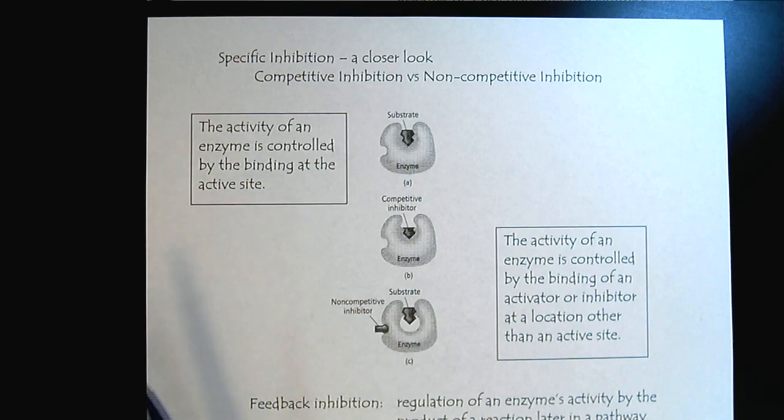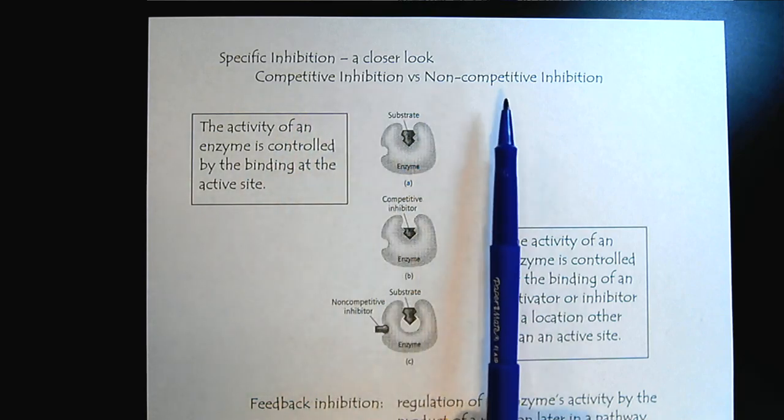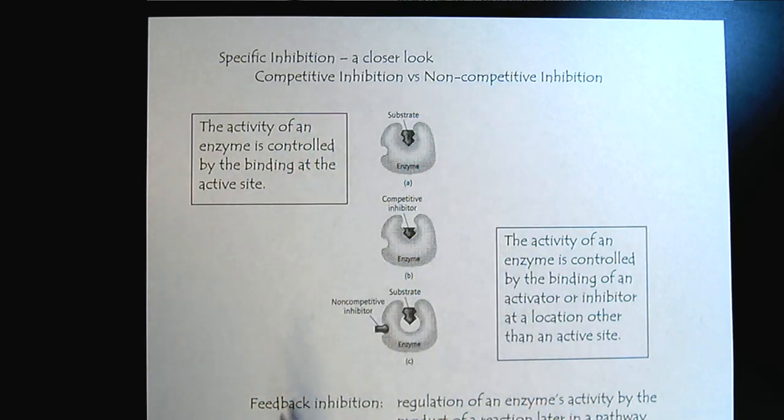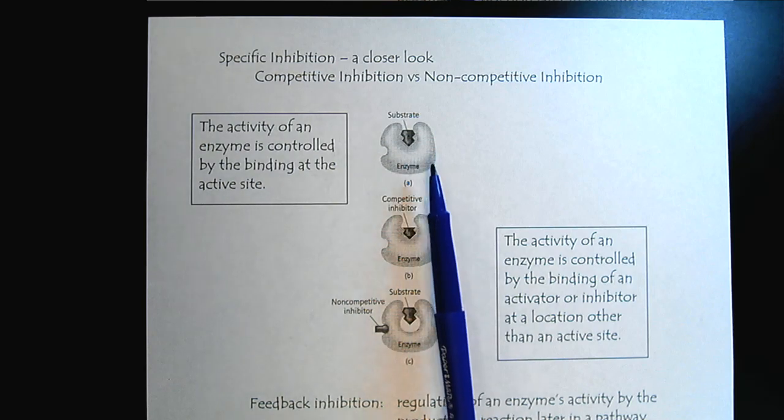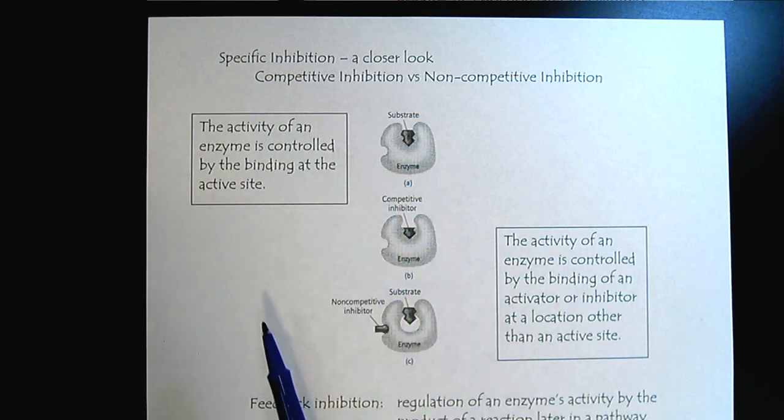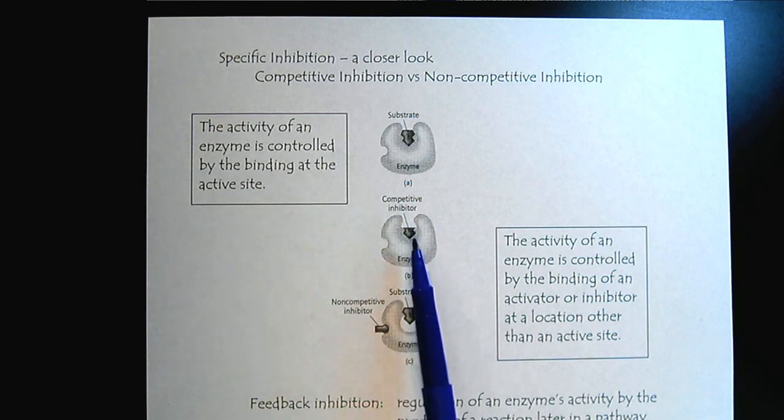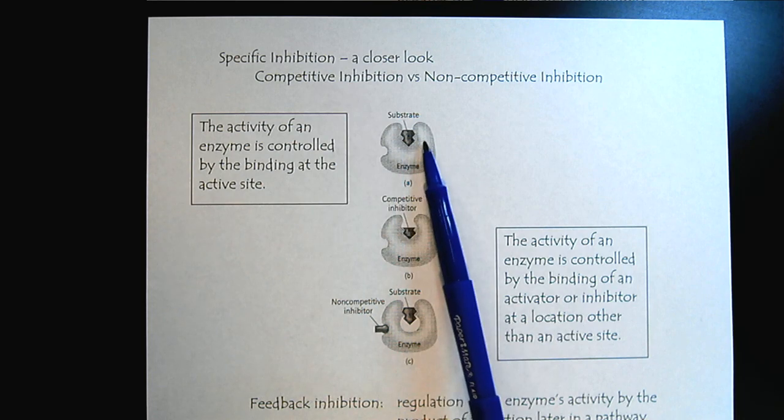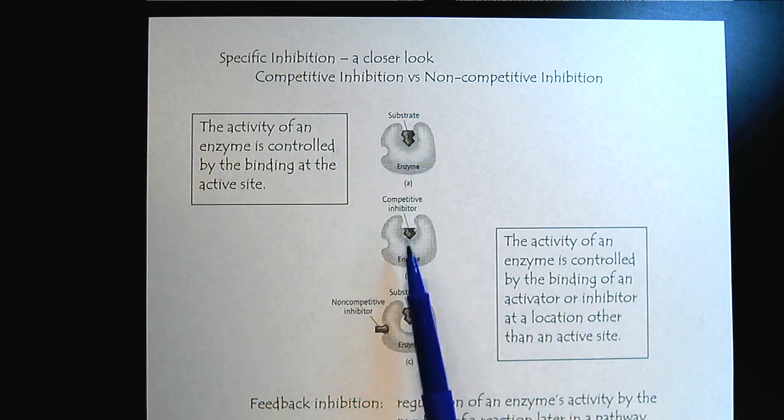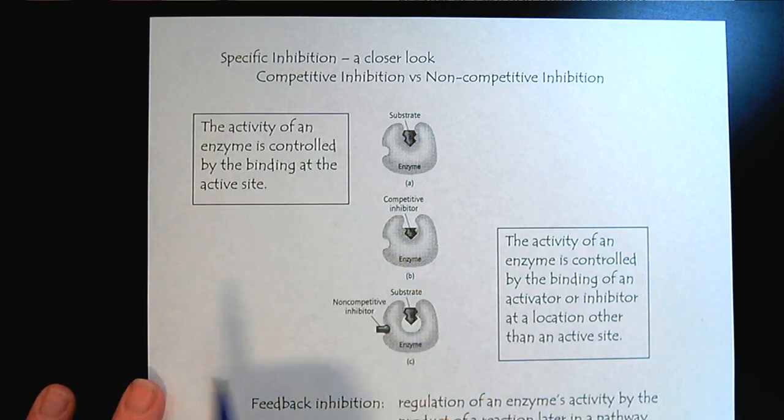So the first idea when we're thinking about specific inhibition is there is competitive versus non-competitive. So here we're back to our enzyme substrate complex. So this would be the catalyzed reaction happening. And so it's very literal. So the competitive inhibitor is interacting at the binding site where we would normally see the substrate. So that's a direct competition for the active site of the substrate. So competitive is a direct competition.